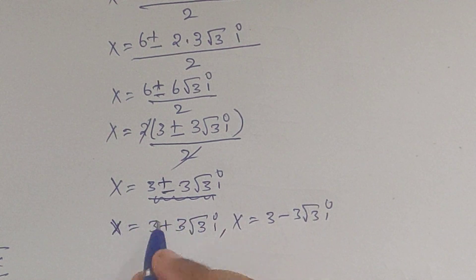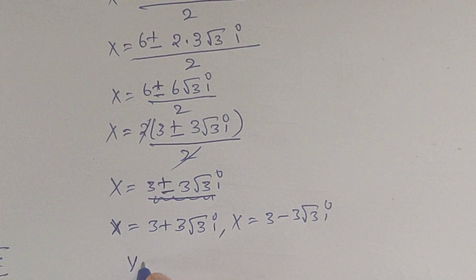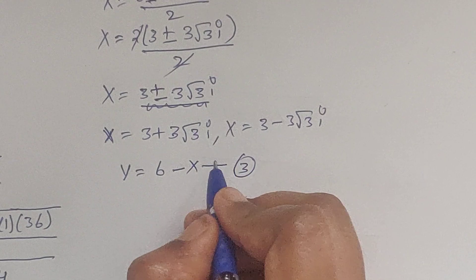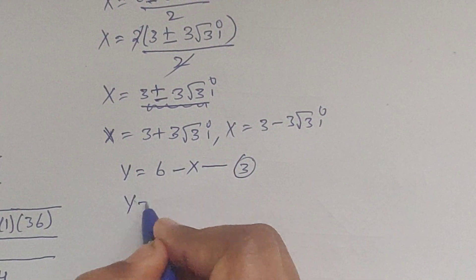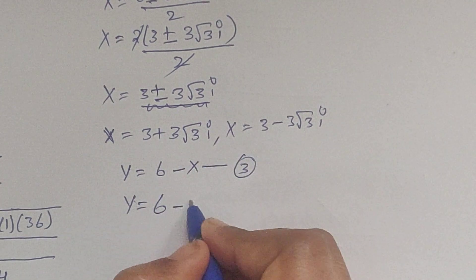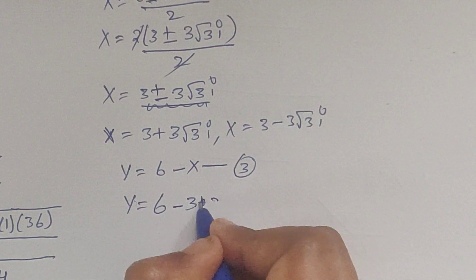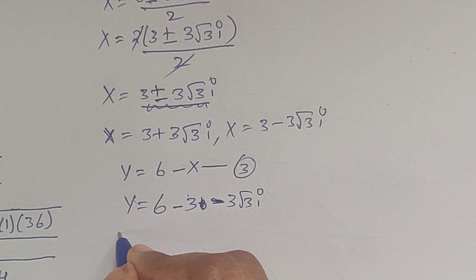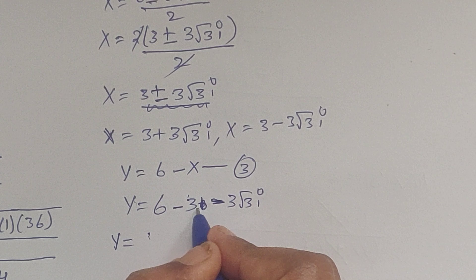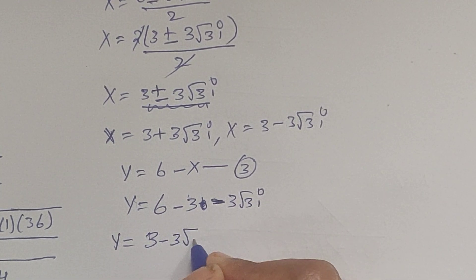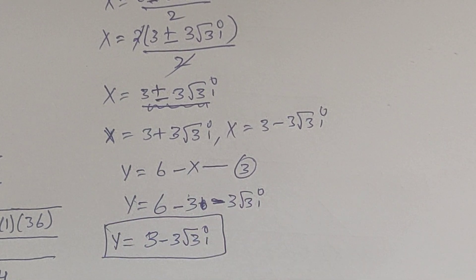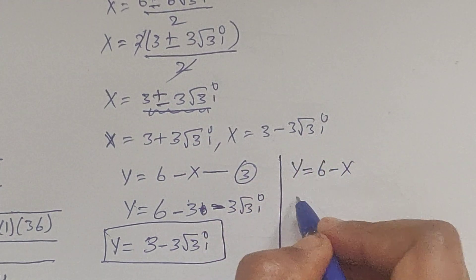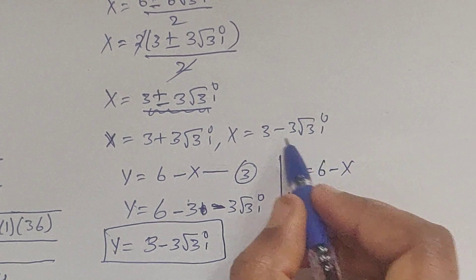So x equals 3 plus 3 square root of 3 i, and the other value is 3 minus 3 square root of 3 i. Now we need to find y. From equation 3, y equals 6 minus x. Substituting x equals 3 plus 3 square root of 3 i gives y equals 6 minus 3 minus 3 square root of 3 i, which equals 3 minus 3 square root of 3 i. And for the other x value, y equals 3 plus 3 square root of 3 i.